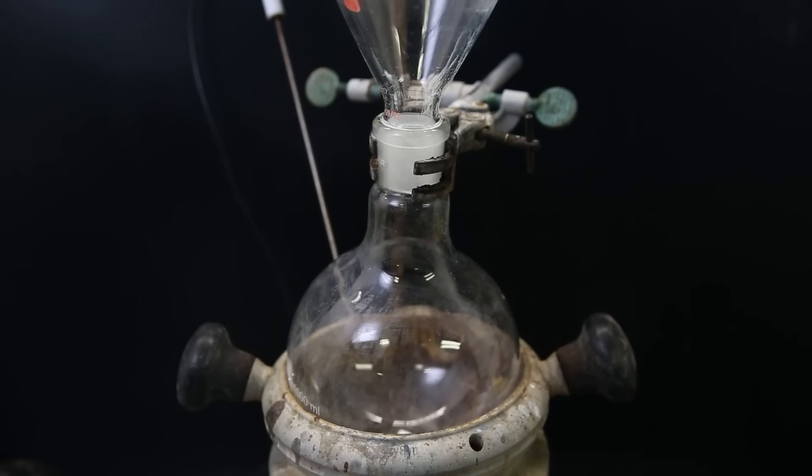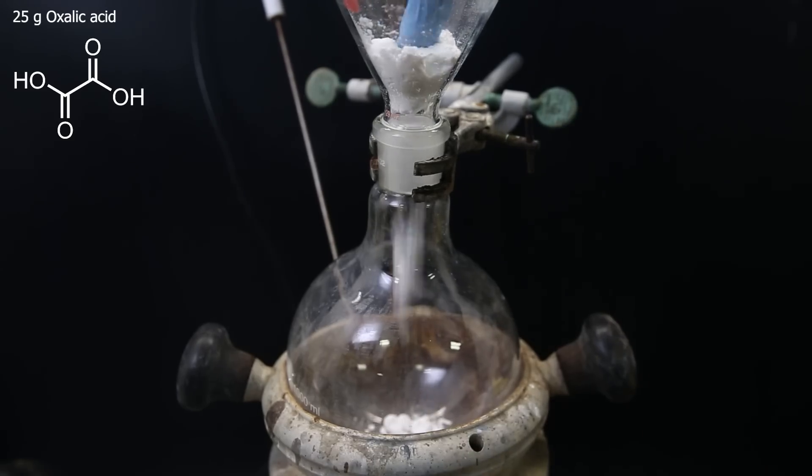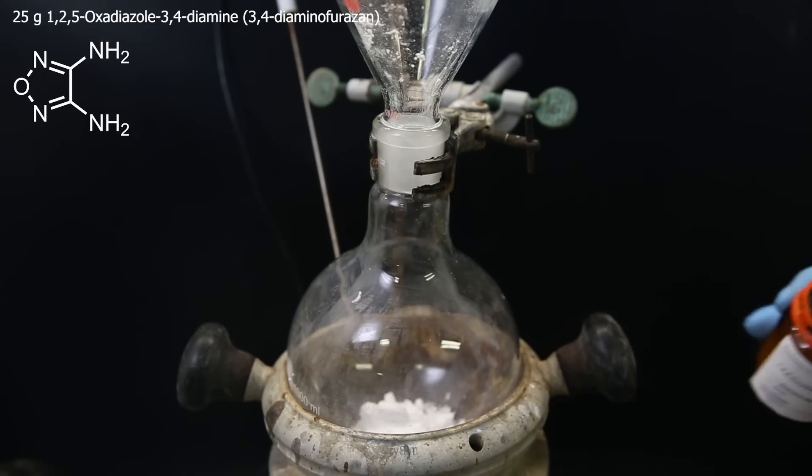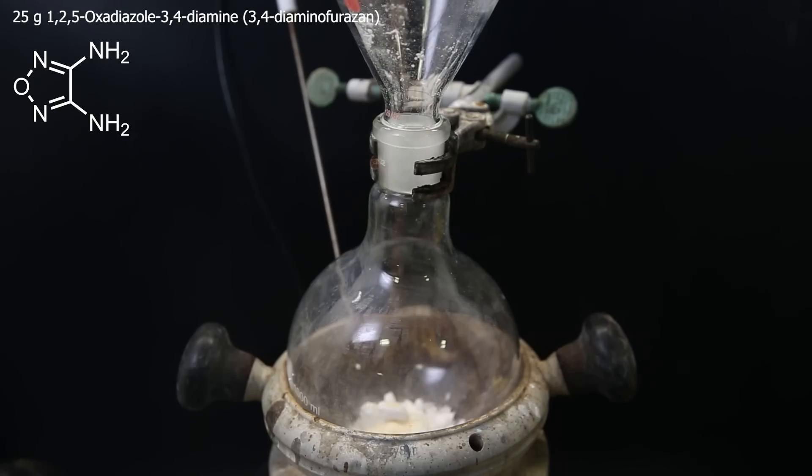So to get started, I set up a flask in a heating block and add in 25 grams of oxalic acid as the first reagent. Then as the second reagent, I add in 25 grams of 3,4-diamino-furozan, which is the whole bottle.